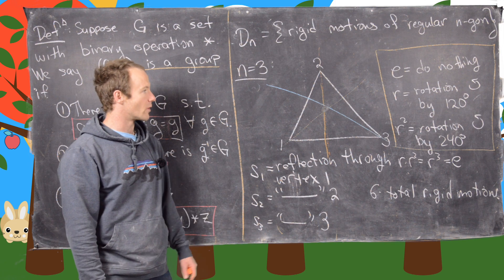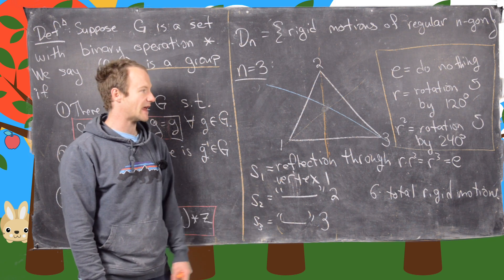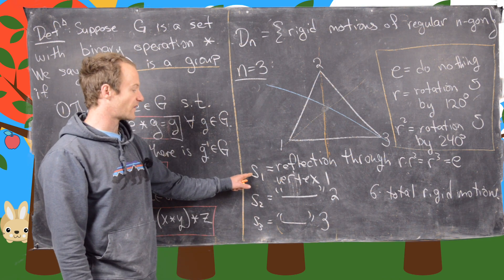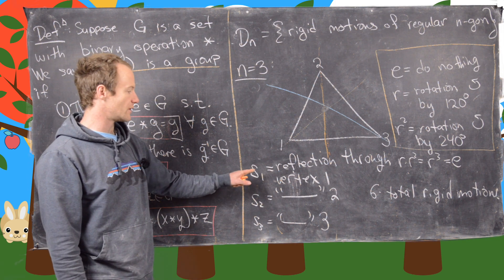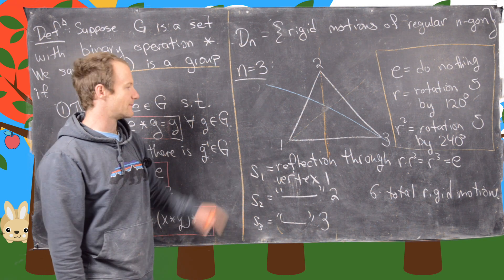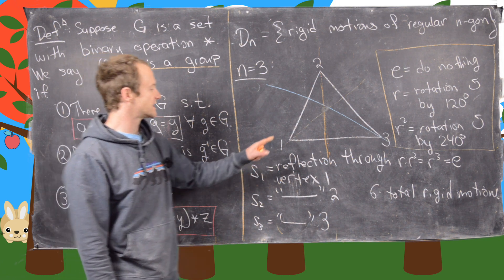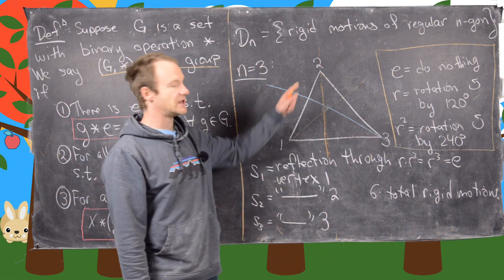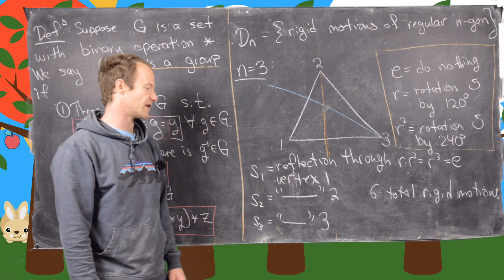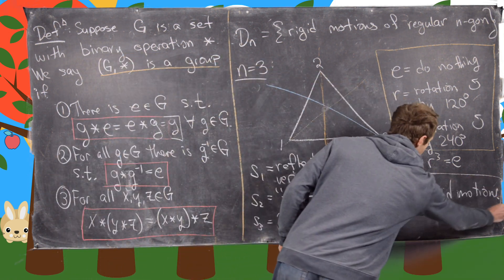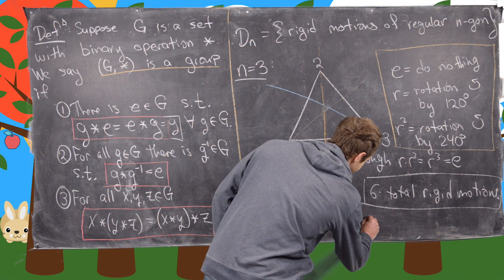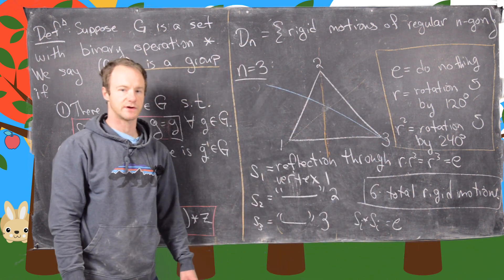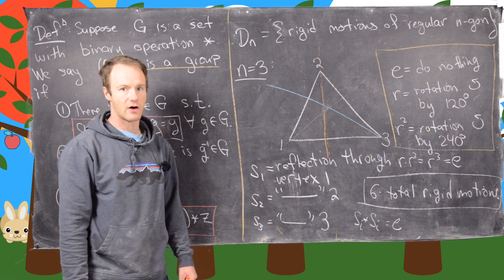Now I want to look at how S1, S2, and S3 are related to the rotation. But first, notice that if you reflect twice in a row — S1 composed with S1 — you get back to the identity. S1 fixes vertex 1 and swaps vertices 2 and 3; doing it again swaps them back, giving nothing at all. So S_i star S_i equals the identity for i equals 1, 2, and 3.